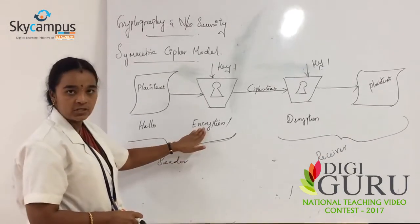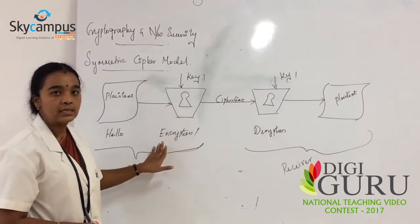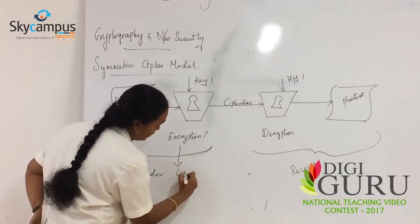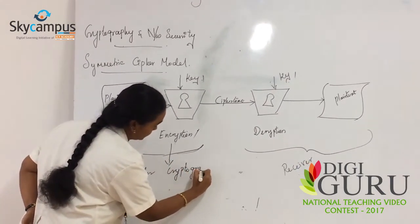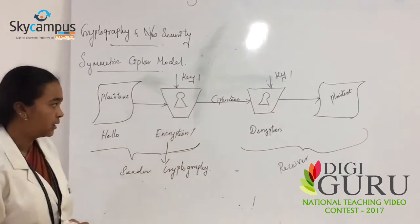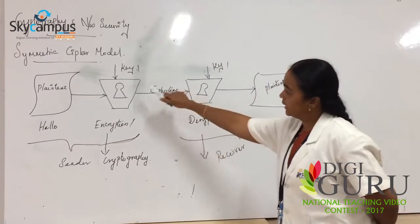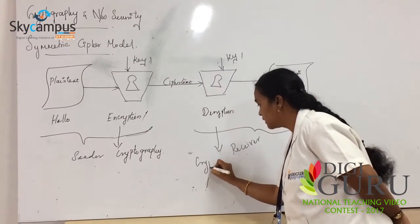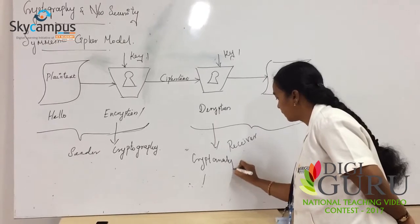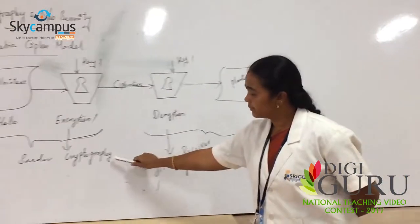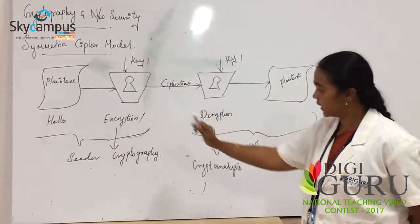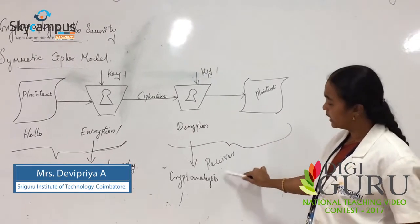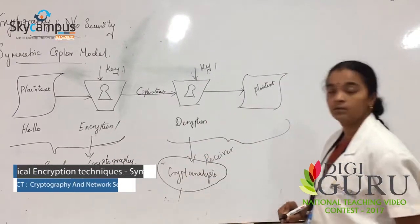In the Encryption side as well as the Decryption side, we use some schemes. Those schemes applied under encryption are called cryptography. Some schemes are applied in decryption — this is called cryptanalysis. Cryptography is on the sender side and cryptanalysis is on the receiver side. Our focus here is the cryptanalysis part.